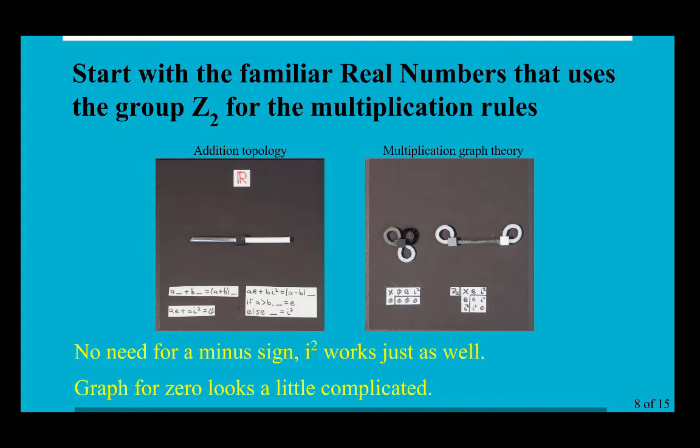So let's start with the familiar real numbers that uses the group Z_2 for the multiplication rules. Let's start with our addition, where I now view the real number line—you know, with zero sitting in the middle—as really more about topology. What it's saying is that if you want to connect the positive numbers with the negative numbers, well you have to go through zero. I have written the negative numbers as i squared, and I did that because when we get to the multiplication rules for complex numbers we'll use i, i squared, i cubed, and i to the fourth actually brings you all back to one, so there's that cyclic nature of it. It's just a different way to write it and works just as well.